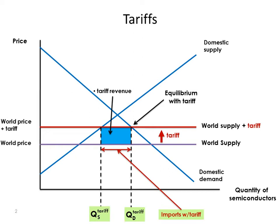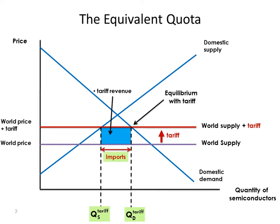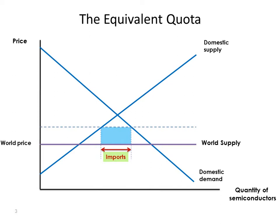Now let's apply this to a quota. Here's our tariff diagram. We want to compare with a quota, so let's clean up our diagram. I'm going to leave some faint lines in here to remind us of where the tariff was and how much imports were under the tariff. To be fair, let's compare the tariff with a quota which brings in exactly the same quantity of imports.